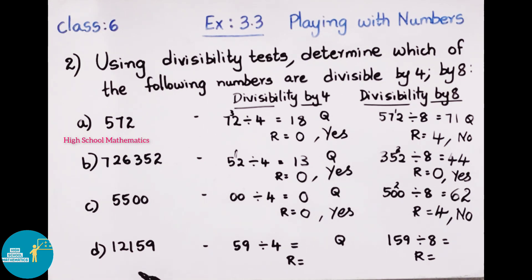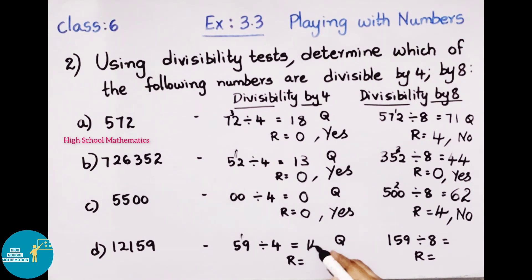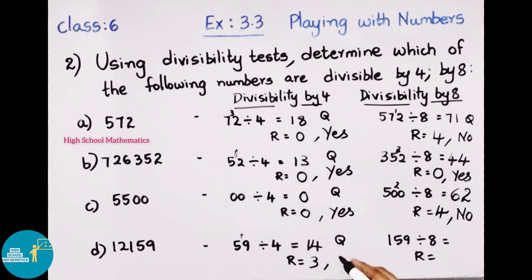Next number: 12,159. Checking divisibility by 4, last 2 digits are 59. Dividing 59 by 4: 4 times 1 is 4; 5 minus 4 gives remainder 1. Bring down 9, making 19. 4 times 4 is 16; 19 minus 16 gives remainder 3. Quotient is 14, remainder is 3. So 12,159 is not divisible by 4.